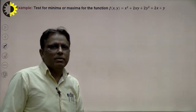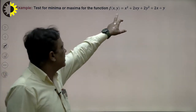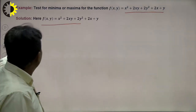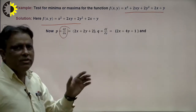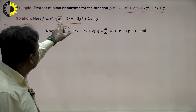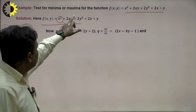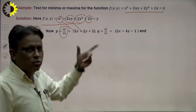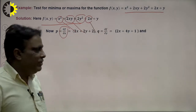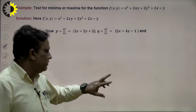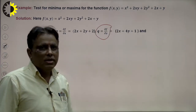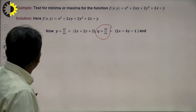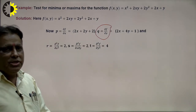Consider this problem: f(x,y) = x² + 2xy + 2y² + 2x + 2y. First, we calculate the first derivative for maxima and minima. We calculate ∂f/∂x: differentiation of x² is 2x, differentiation of 2xy is 2y, differentiation of 2y² is 0, and differentiation of 2x is 2. For the y-derivative: differentiation of 2xy with respect to y is 2x, and so on.